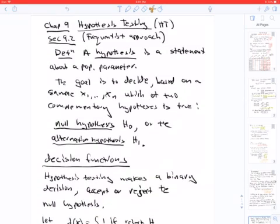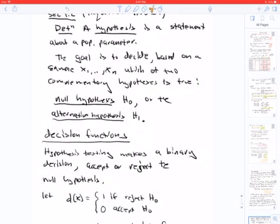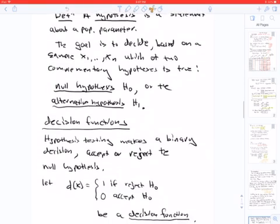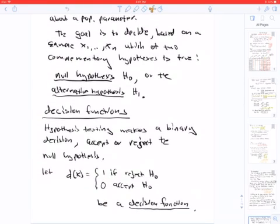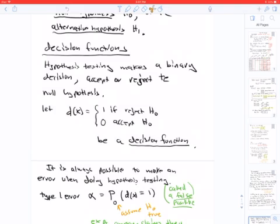On to hypothesis testing. We'll skip section 9.1, which is the Bayesian framework for now. Section 9.2: a hypothesis is a statement about a population parameter, so we'll be making tests about population parameters. We have a null hypothesis and an alternative hypothesis, and we have a decision function that will either reject or accept the null hypothesis.